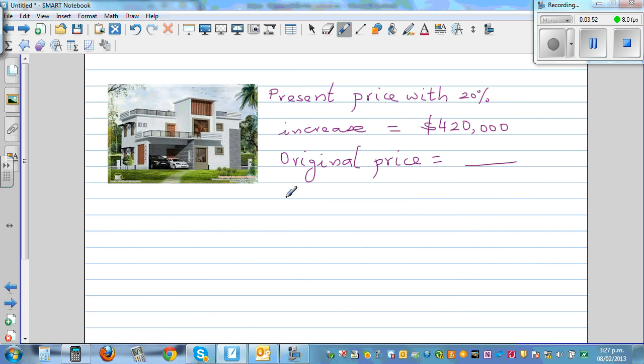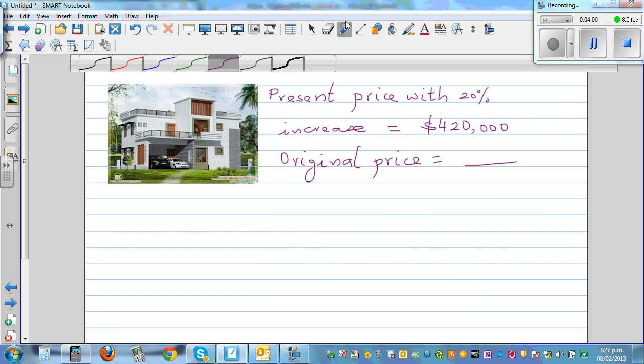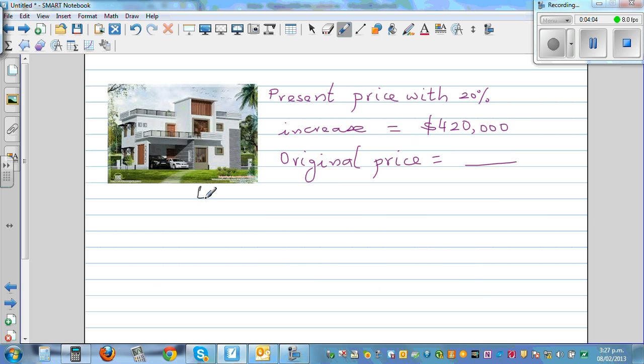This is a house. What they're saying is the present price with 20% increase is $420,000. What's the original price? So we're going to use the same strategy. Let the original price be equal to X dollars or X.